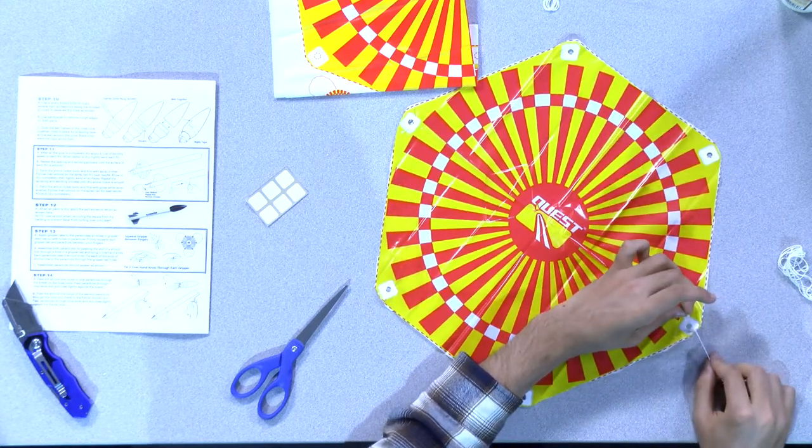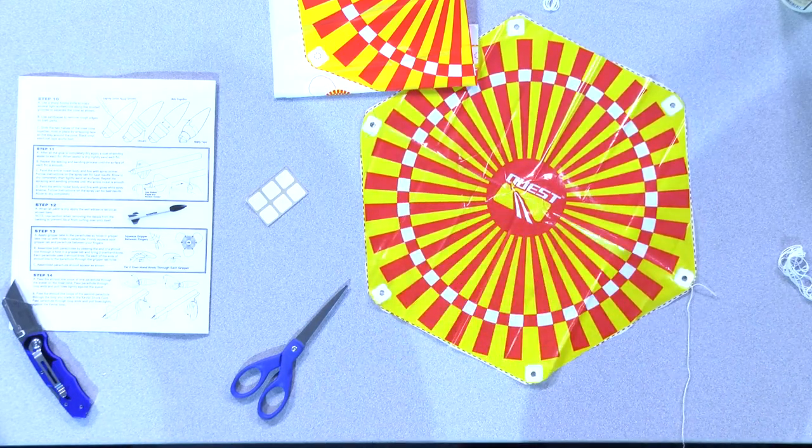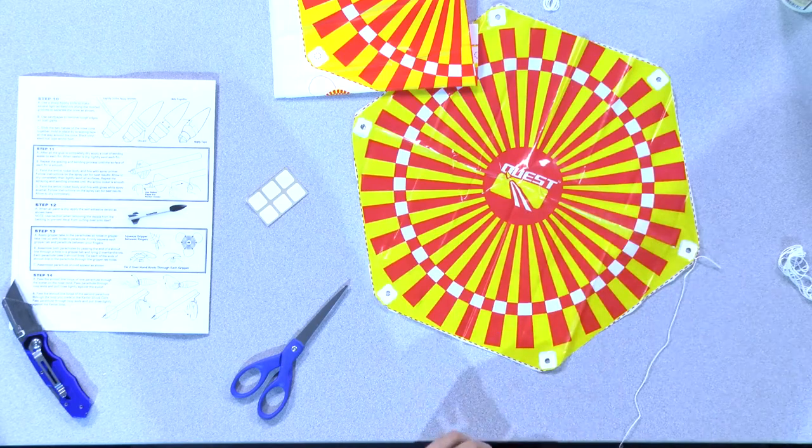Now take the other end of the string, guide it toward the consecutive hole in the parachute and tie the same knot through there.